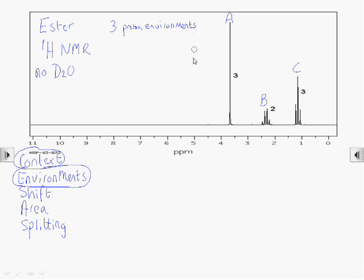And now we need to have a look at the chemical shift for each of those environments. So peak A, chemical shift of 3.7 parts per million. If you look that up on your datasheet, you'll see that environment is a proton on a carbon connected to an oxygen atom.